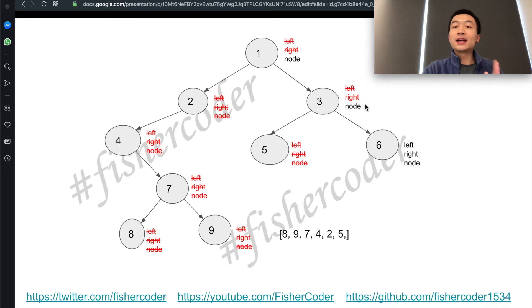Right has 6. 6 doesn't have any left or right. So we'll just add this node itself, 6, into the output list. And then it goes back to node. Node is 3. So we'll add 3 into the output list. Then it goes back to the final last node, which is the root. Then we add node 1 into the output list. That's it.